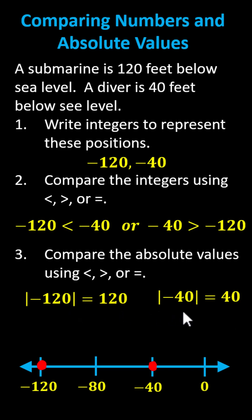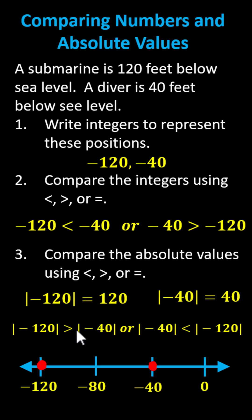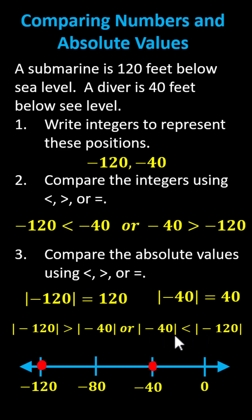Now that we know the absolute values, we can compare them. The absolute value of negative 120 is greater than the absolute value of negative 40, because 120 is greater than 40. We can also state the absolute value of negative 40 is less than the absolute value of negative 120, because 40 is less than 120.